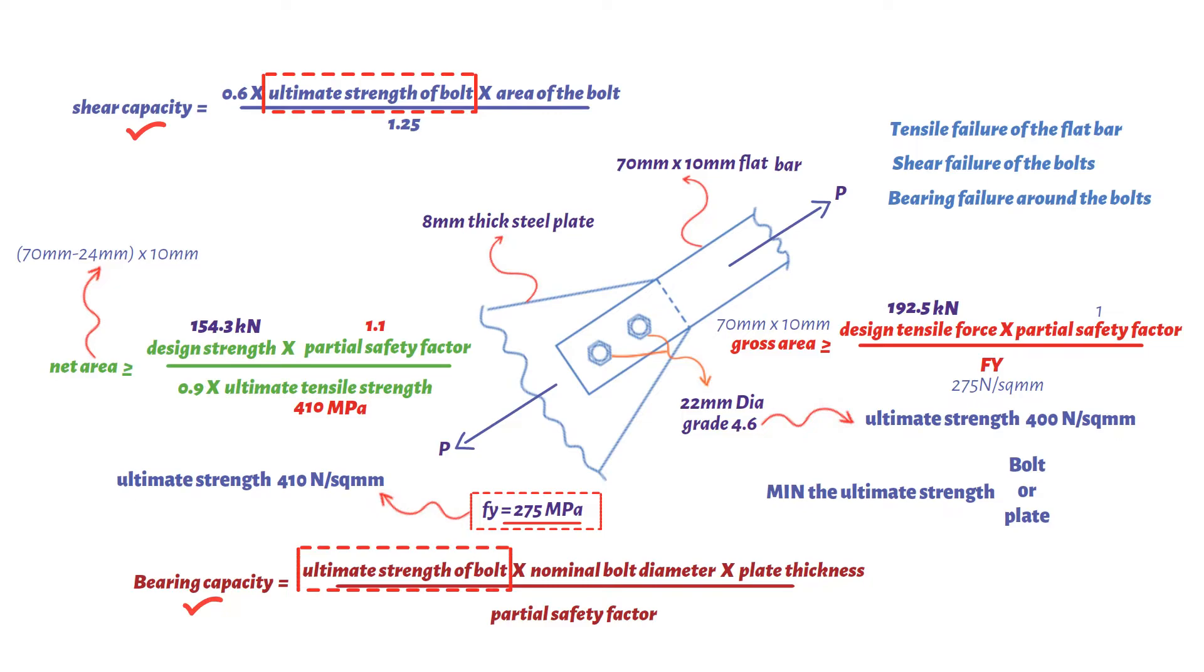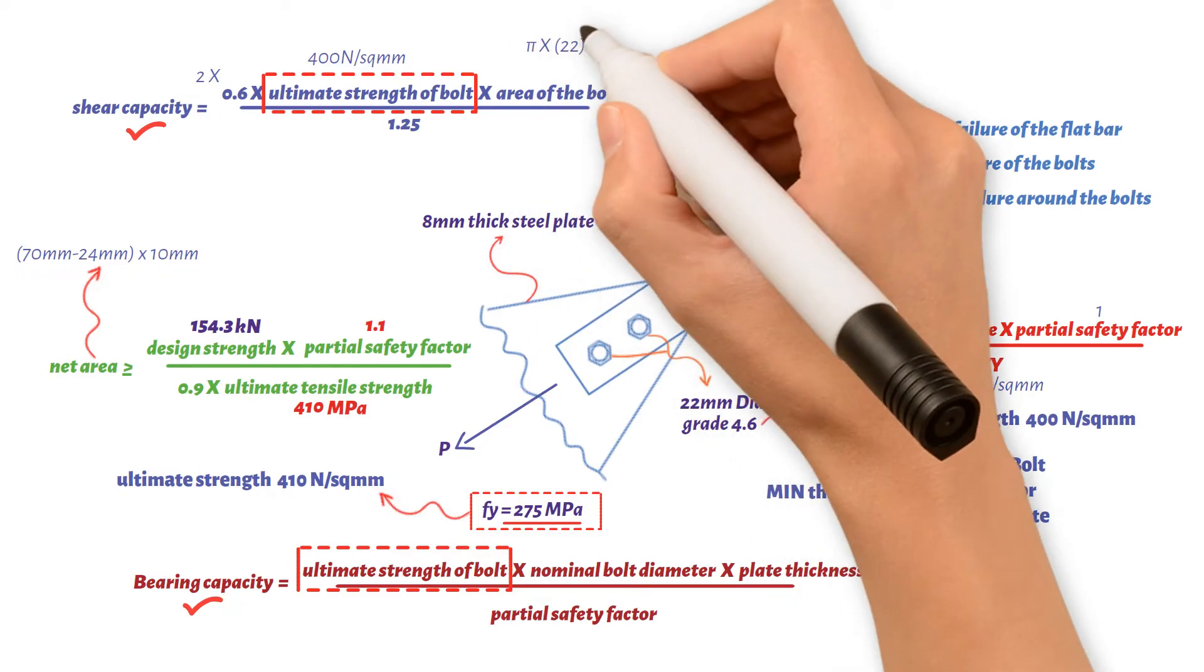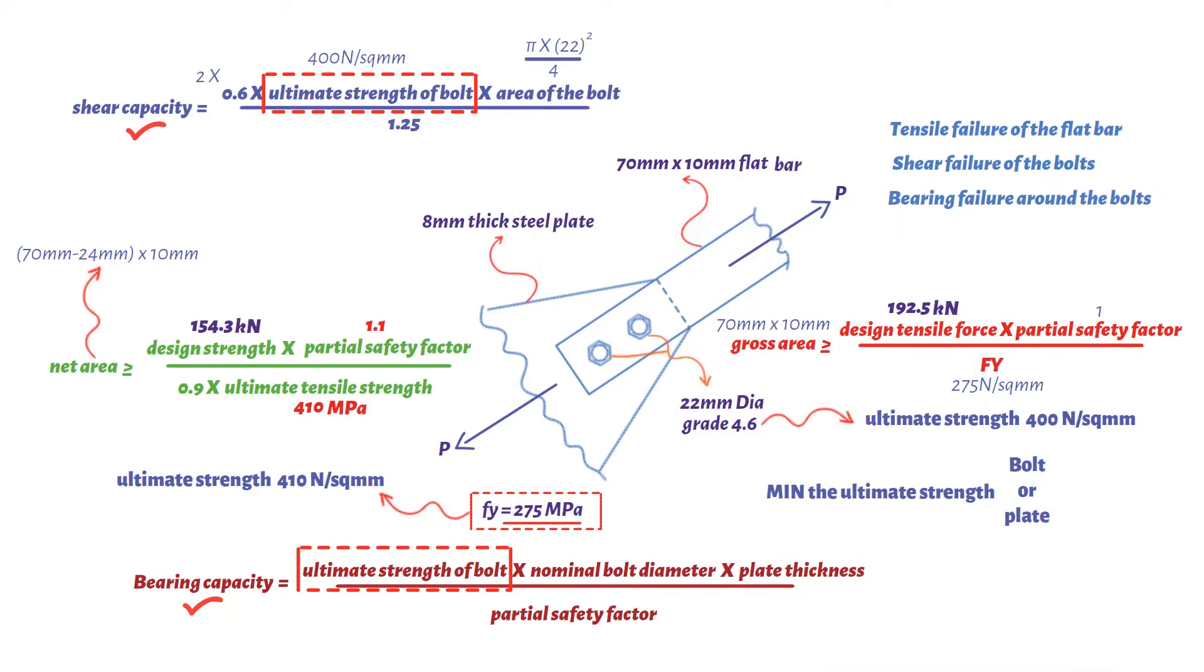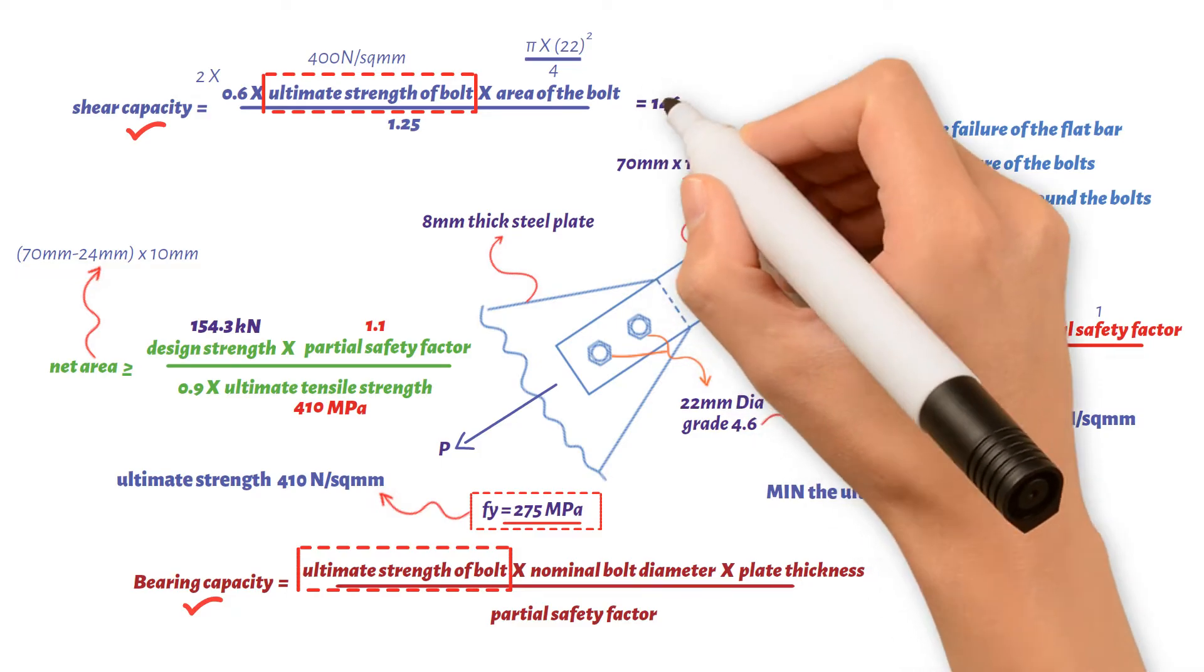Following on, based on shear capacity equation, shear capacity equals 2 times 0.6 times the ultimate strength of 400 newton per square millimeters times the area of the bolt, which is pi 22 squared divided by 4 divided by partial safety factor 1.25 divided by 1000. This gives us a value of 146 kilonewtons.